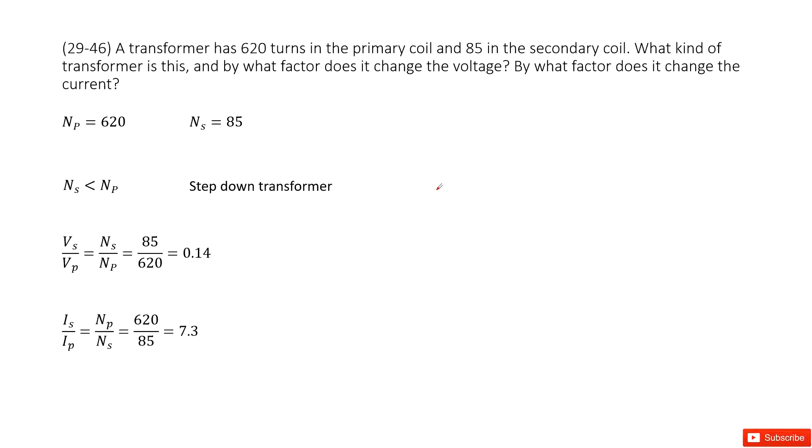So we have a transformer with the primary turns Np equals 620 and secondary turns Ns equals 85. The first question asks what kind of transformer is this. As we know, there are two kinds of transformers: step up and step down.